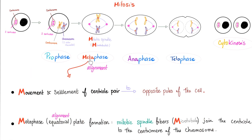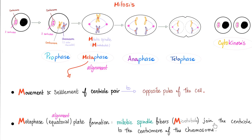Metaphase — meta means change. What change? Basically it's alignment. Everything is aligned, like when the stars are aligned. Movement and settlement of centriole pairs onto opposite sides of the cell — in prophase they started moving, but in metaphase they have settled. And here is the secret word in metaphase: alignment. Metaphase plate formation — look at the alignment in the center, called equatorial plate formation because it's in the equator. Mitotic spindle fibers, which are microtubules, join the centriole to the centromere.